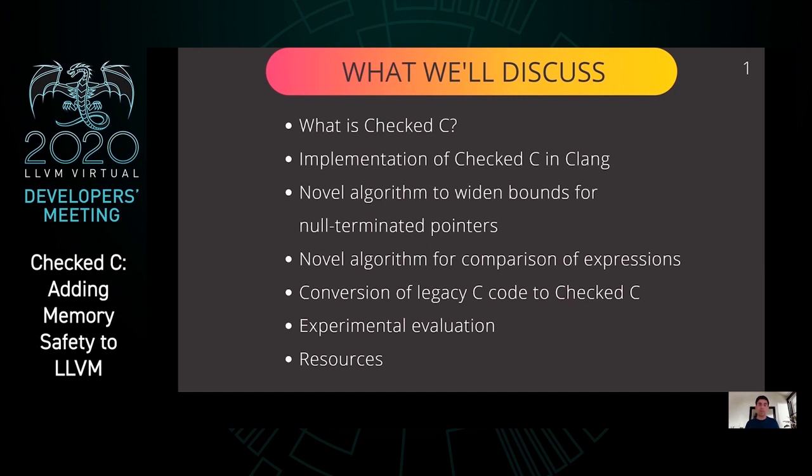This is a brief outline of our talk today. We are going to start off with discussing what is Check C, then talk about the implementation of Check C in Clang. We are then going to describe two novel algorithms, the first to automatically widen bounds for null-terminated pointers, and the second for comparison of expressions. Then we'll discuss how to convert legacy C code to Check C, experimental evaluation, and finally resources for further reading.